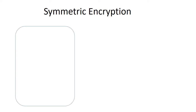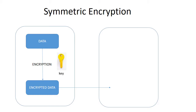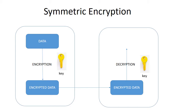In symmetric encryption, the data is encrypted on one side using a special key, and then the encrypted data is sent to another side. That other side receives the encrypted data and uses the same key to decrypt it. The main point here is that the keys used on both sides are the same.